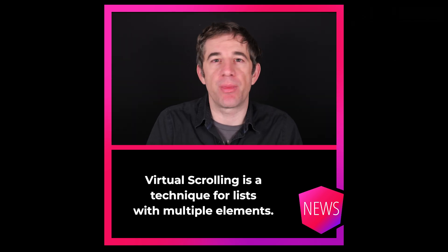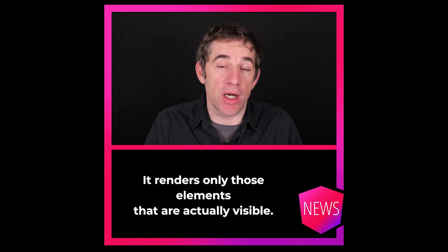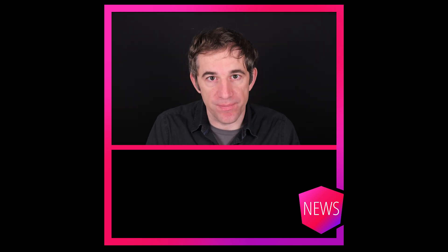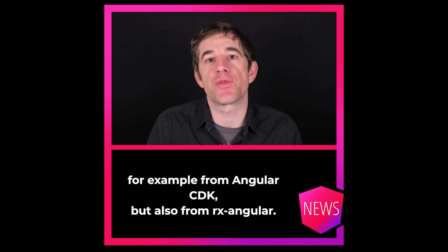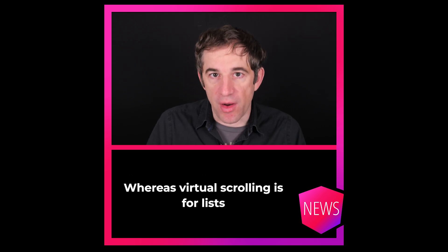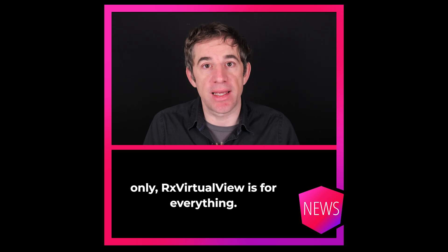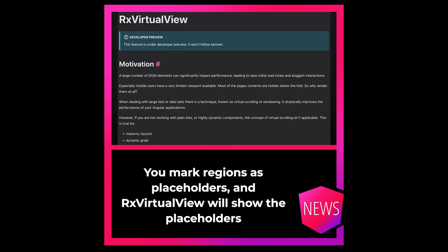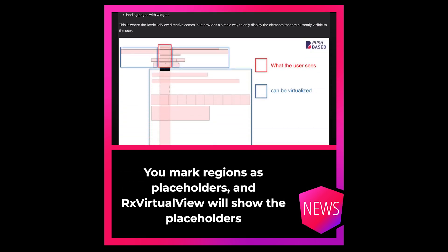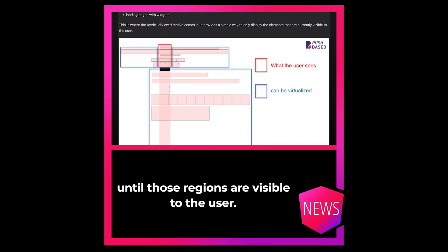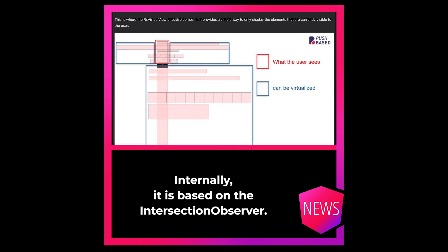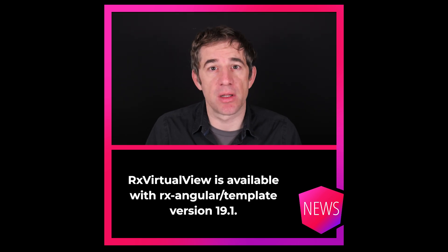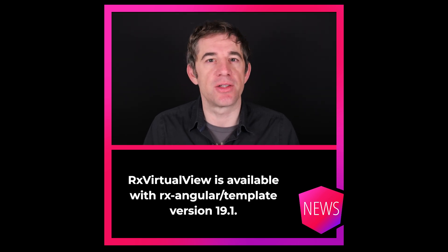Virtual scrolling is a technique for lists with multiple elements — it renders only those elements that are actually visible. Implementations exist from Angular CDK but also from RxAngular. Whereas virtual scrolling is for lists only, RxVirtualView is for everything. You mark regions as placeholders and RxVirtualView will show the placeholders until those regions are visible to the user. Internally it is based on the Intersection Observer. RxVirtualView is available with RxAngularTemplate version 19.1.